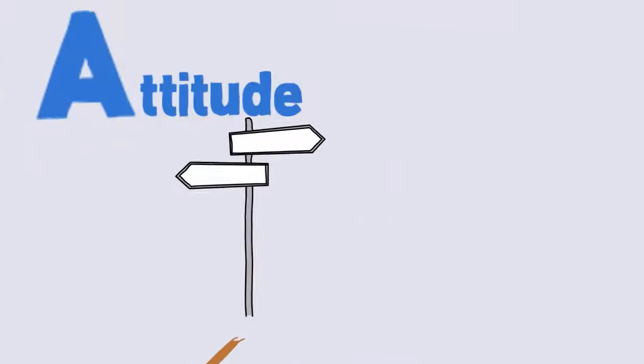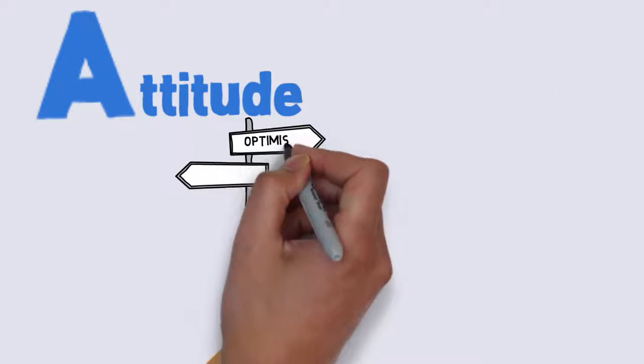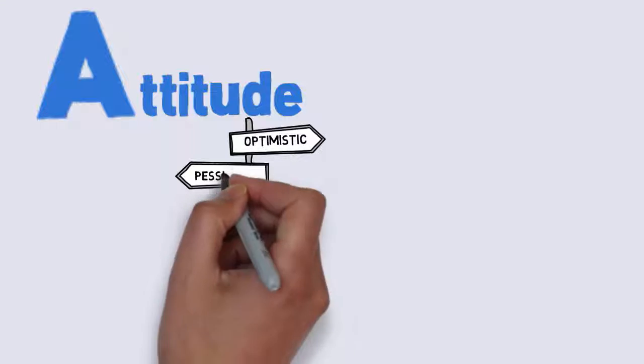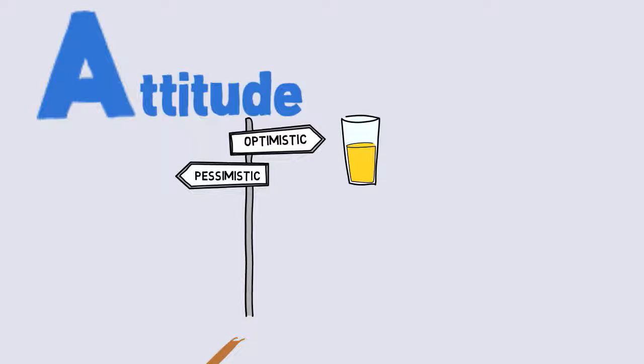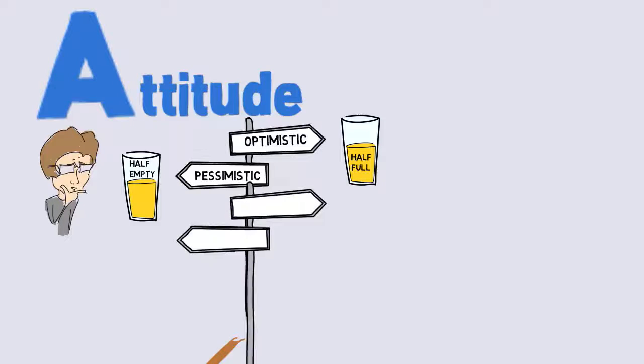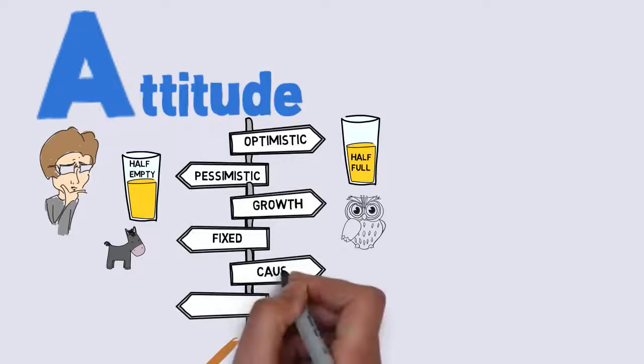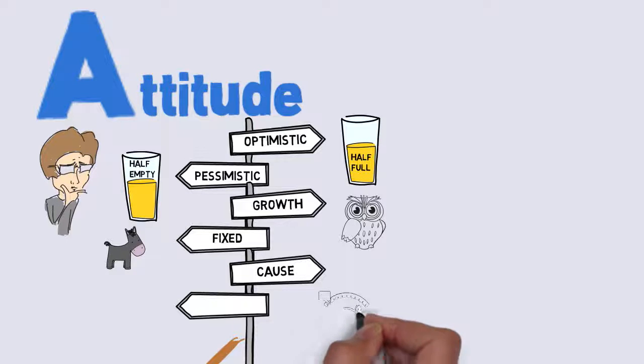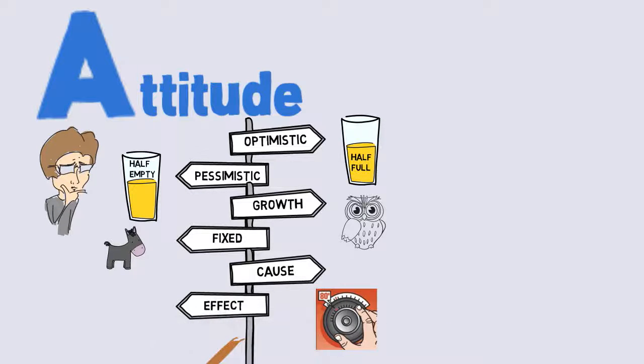Our attitude determines how we approach the path we achieve. It's important to mention here that you choose your own attitude. You can be optimistic or pessimistic. You can be growth-minded or fixed-minded. You can be a cause for your life or you can choose to be at the effect of others and the environment. Attitude is a choice.